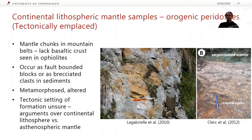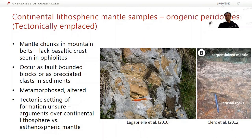In terms of continental lithospheric mantle samples, one thing we can look at is orogenic peridotites — these are tectonically emplaced. As I mentioned, there are some people who think these are actually slices of asthenosphere rather than lithosphere, so in that case they're not very useful to us. But I think the consensus is that they're probably chunks of continental lithosphere — little slices or chunks of mantle in mountain belts, generally not attached to basaltic crust like we'd seen in ophiolites. There are two main types: fault-bounded blocks, and you can also find them as brecciated clasts in sediments.